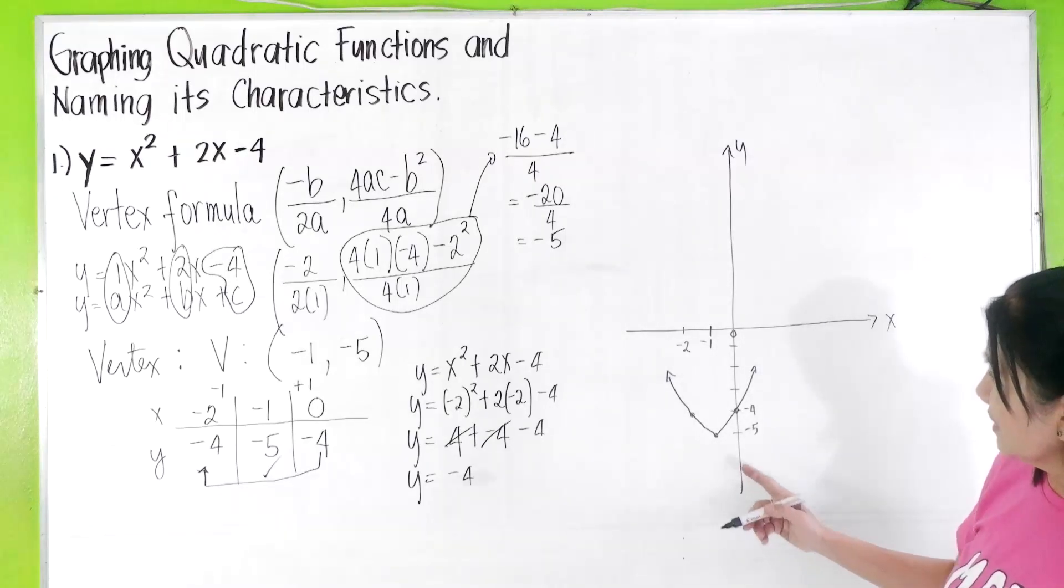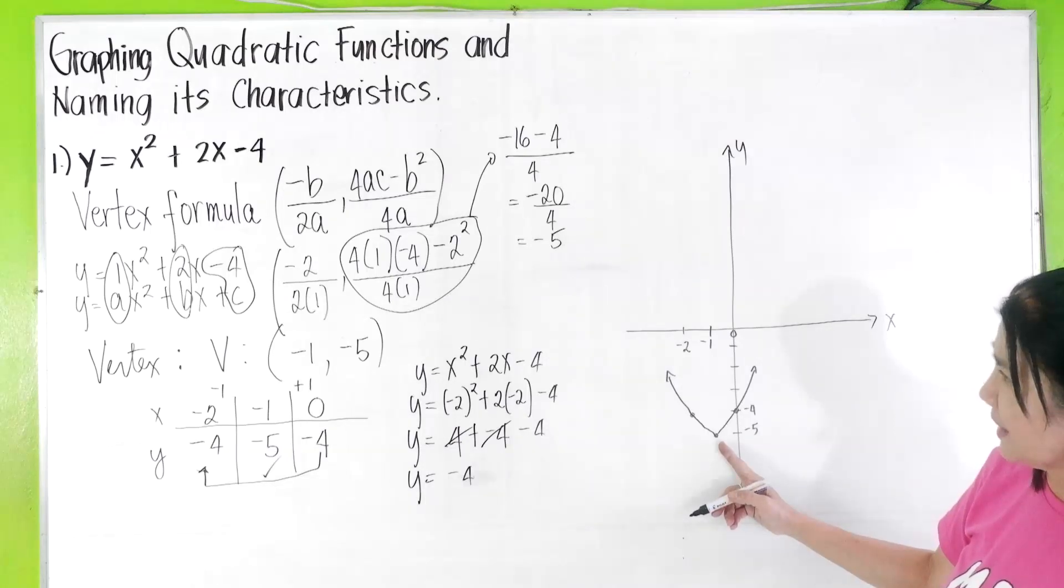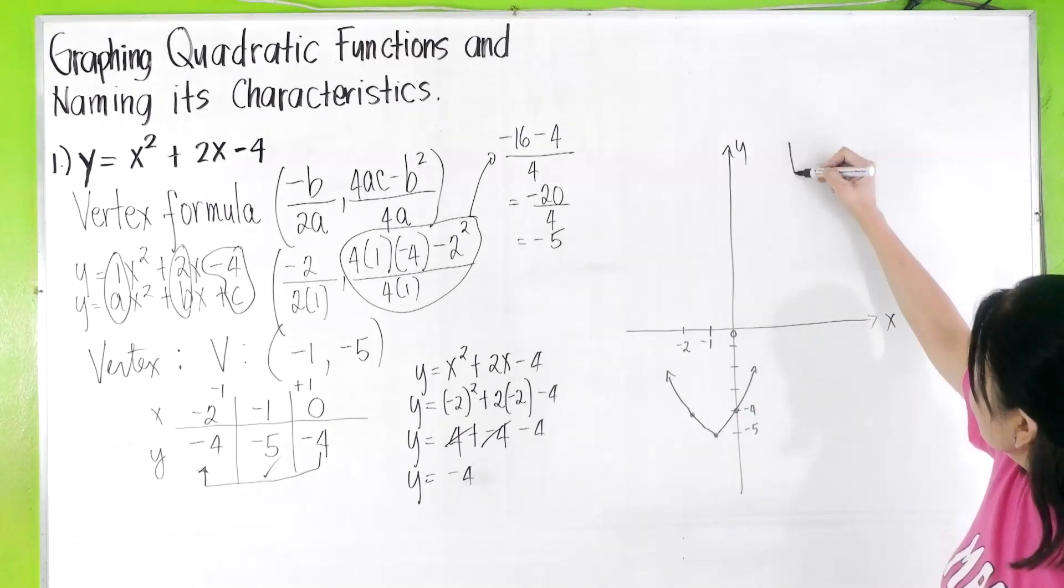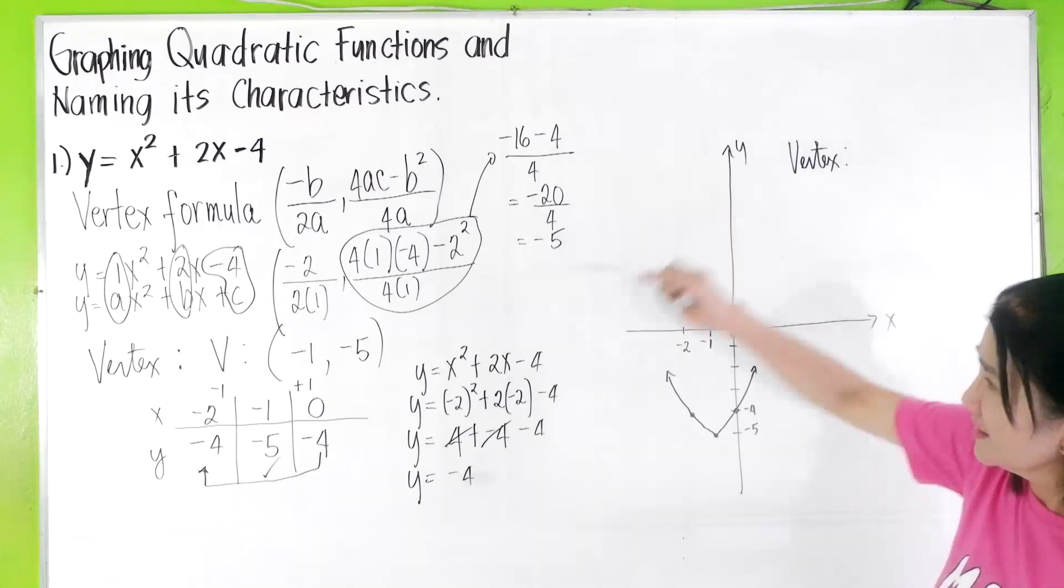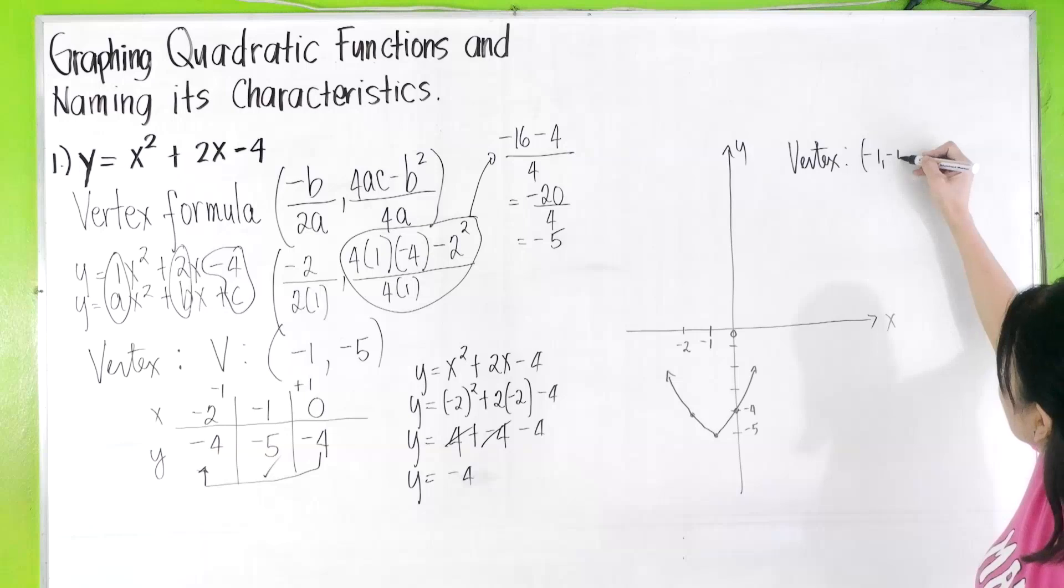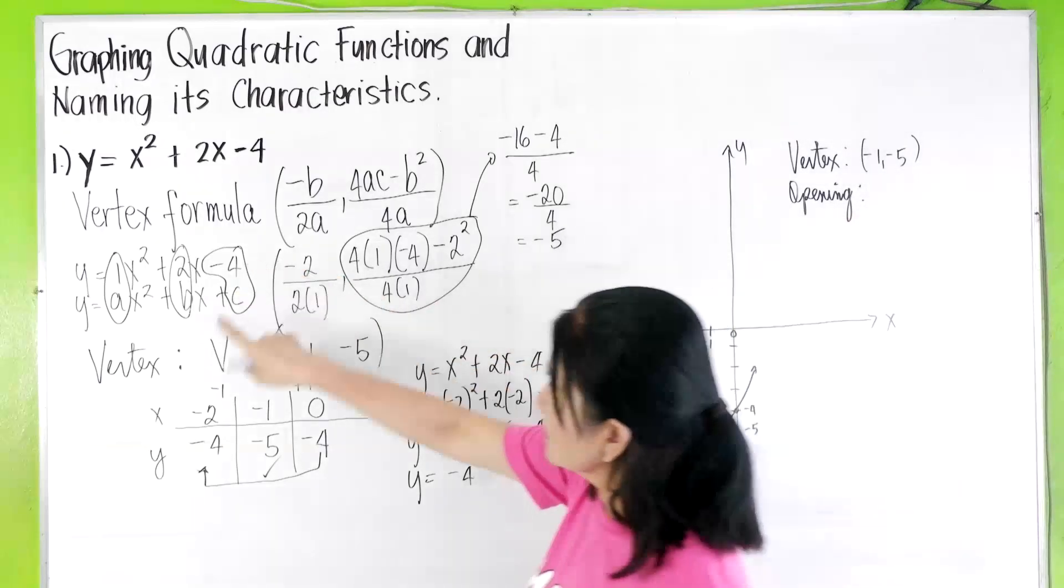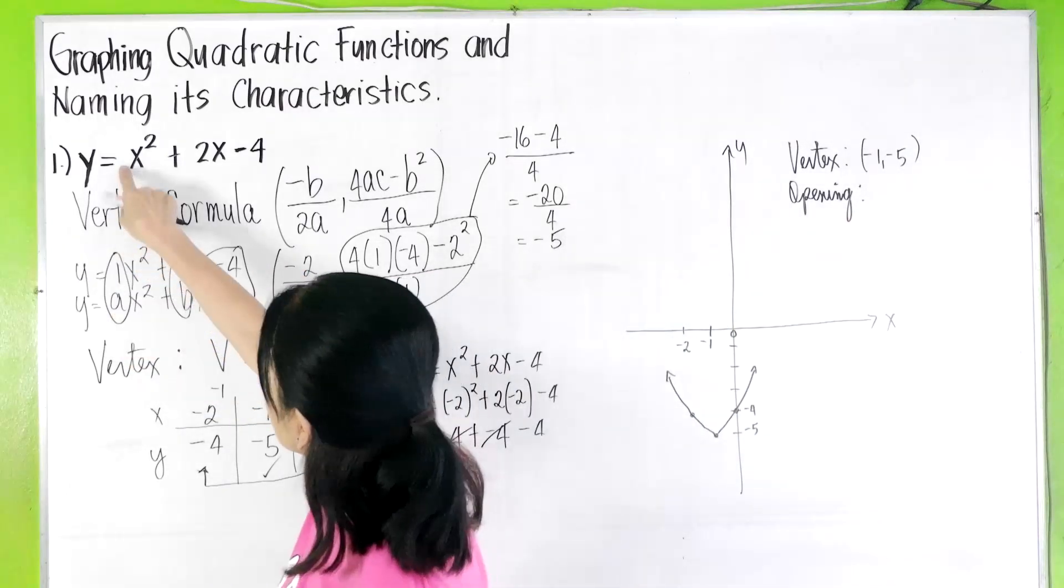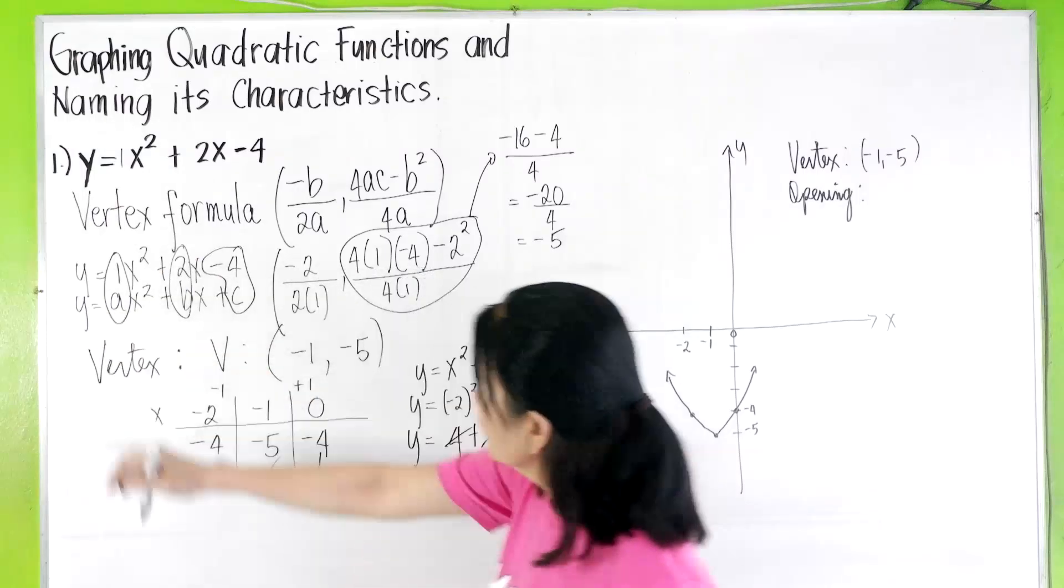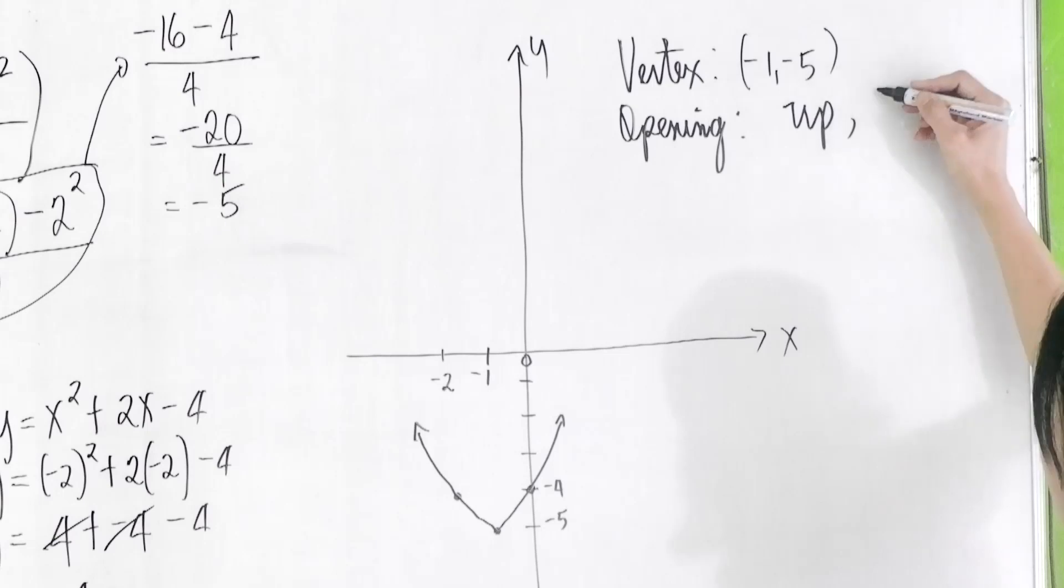And you can now identify the characteristics of this parabola. Your vertex is -1, -5. The opening, remember, a is positive 1. When a is positive 1, it is opening up. Your parabola will look like this, opening up.